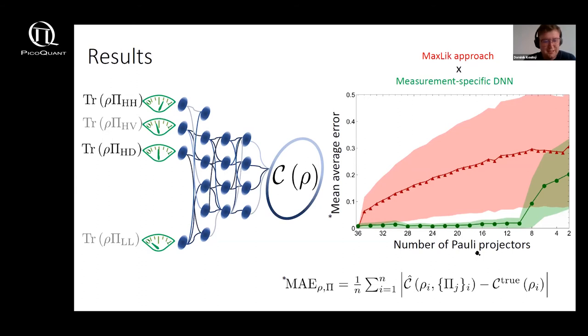What is really surprising is that the deep neural network with only let's say 10 input probabilities can predict the value of concurrence with the same accuracy, the same order, as from full projectors. And as I said before we can see that if you just discard a few projectors the tomographic approach fails on average to predict accurately what the level of entanglement is.